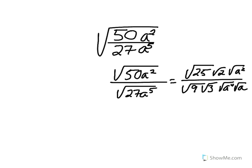We can see that this radical can be broken up using the division property of square roots. We break it up into the square root of 50a² divided by the square root of 27a⁵. This makes the most amount of sense to do here because 50 divided by 27 doesn't reduce.